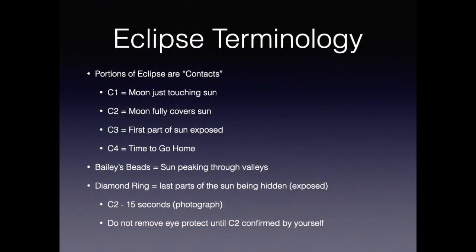But first I want to introduce you to some eclipse terminology. The portions of an eclipse are referred to as contacts. C1 is when the moon is just touching the sun. C2 is the period where the moon starts to fully cover the sun. C3 is the period where the moon exposes the sun. And C4 is the end of the eclipse. Bailey's beads are a phenomenon that occurs during C2 and C3 when the mountains and valleys of the moon block or expose the surface of the sun.